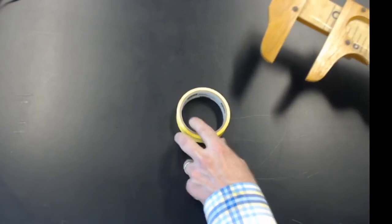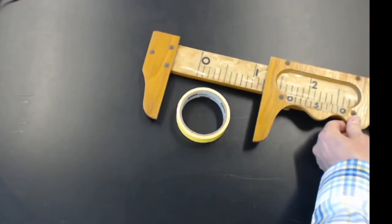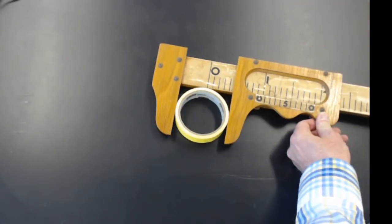So here's the clamp. We're going to use it here. This roll of tape is like the wire. We want to know the diameter of the wire, so we'll clamp it on.